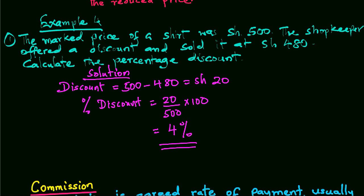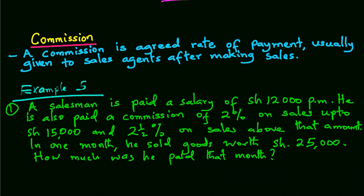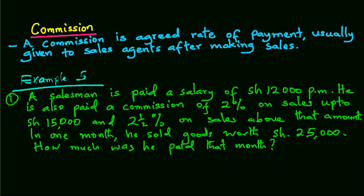Commission is some agreed rate of payment usually given to sales agents after making sales. It is expressed as a percentage.